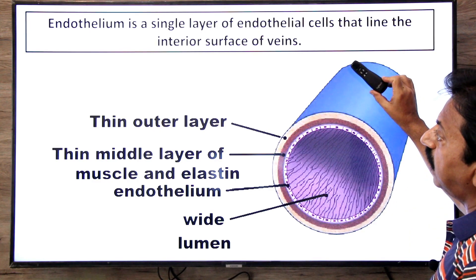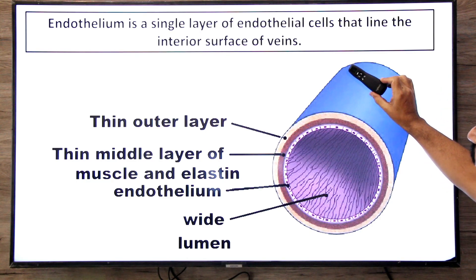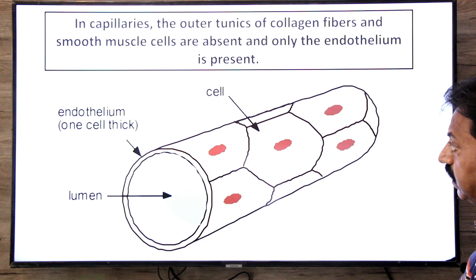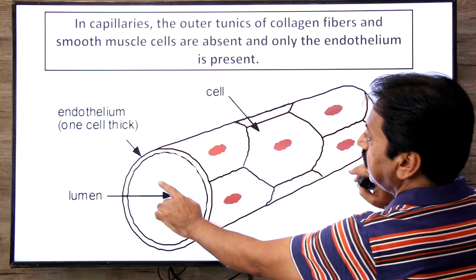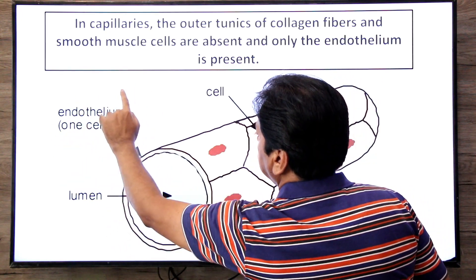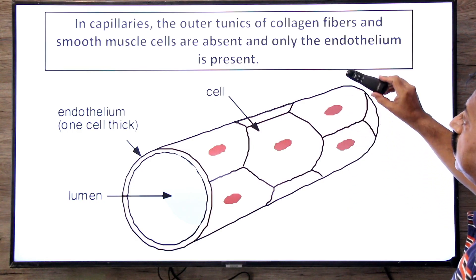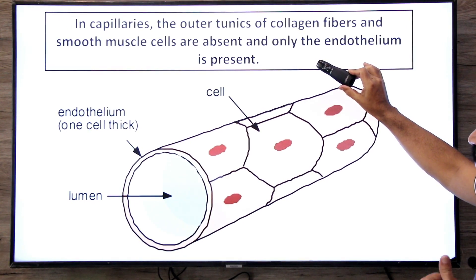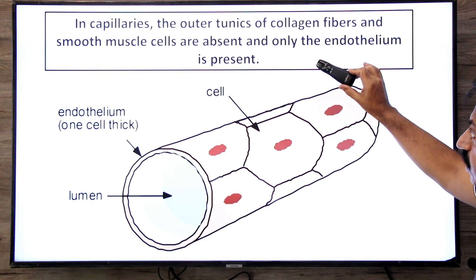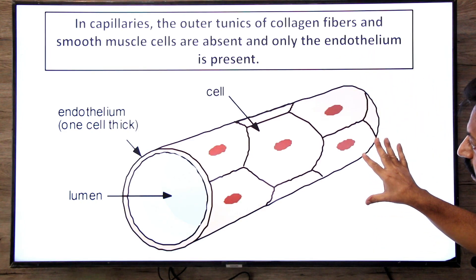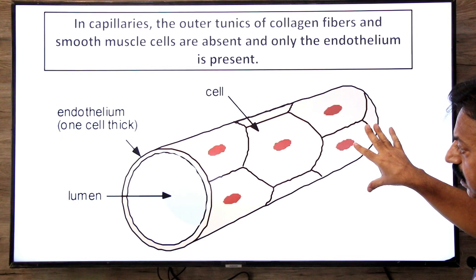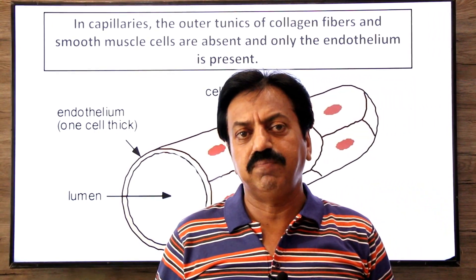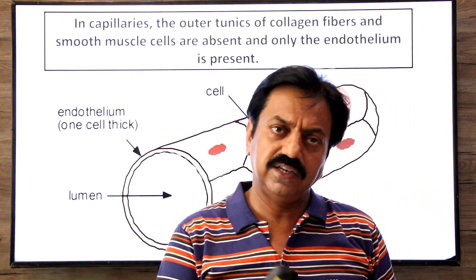The endothelium of veins is a single layer of endothelial cells lining the interior surface of veins. For capillaries, there is only the endothelium layer — the outer tunica adventitia of collagen fibers is absent, and the smooth muscle tunica media is absent. Only the endothelium is present, because exchange of gases, nutrients, and waste occurs between capillaries and body cells. In today's lecture, we studied blood vessels: arteries, veins, and capillaries. Thank you, dear students.